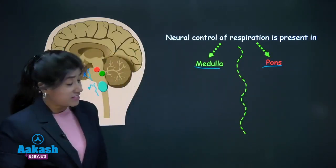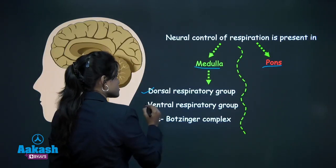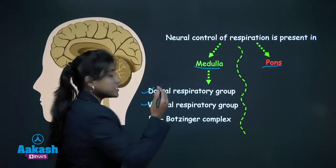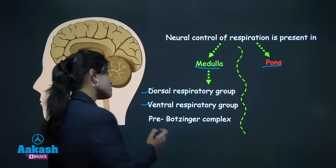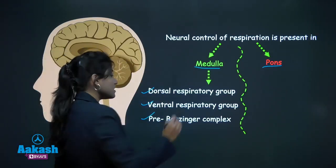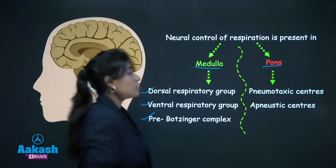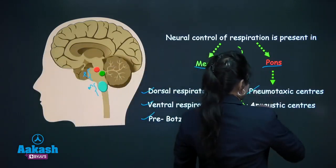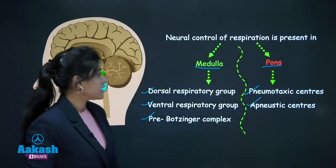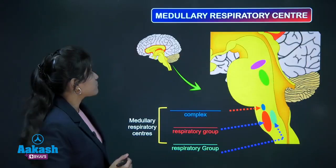In medulla, we are having various centers like the dorsal respiratory group of neurons, ventral respiratory group of neurons, and pre-Bötzinger complex. In pons, we are having pneumotaxic centers and apneustic centers.